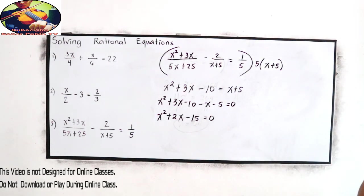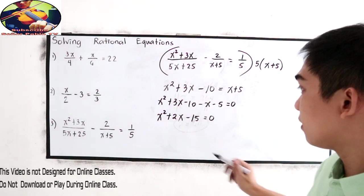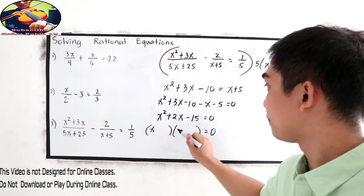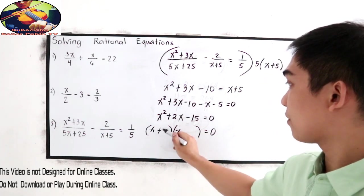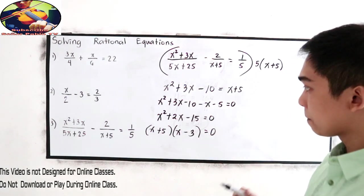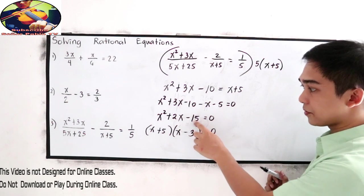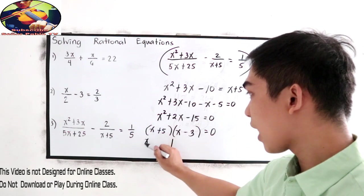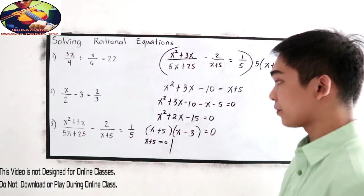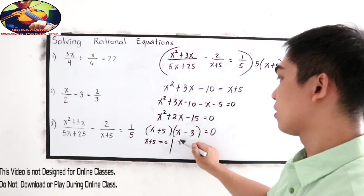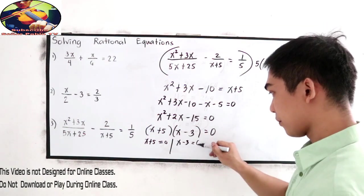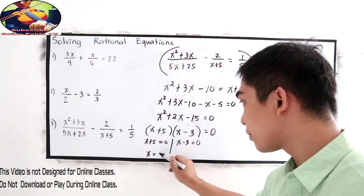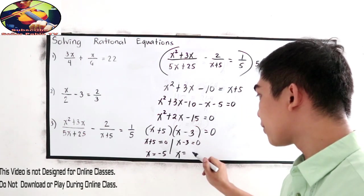Now factors of negative 15, the sum must be positive 2. So that is positive 5 and negative 3. 5 times negative 3, that is negative 15. 5 minus 3, that is positive 2. So solve for x. x plus 5, just equate to 0. x minus 3, equate to 0. Then transpose: x is equal to negative 5 and x is equal to positive 3.